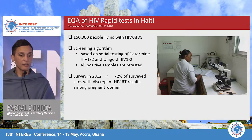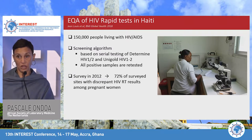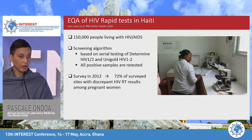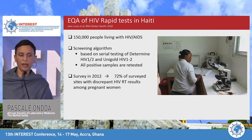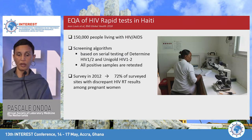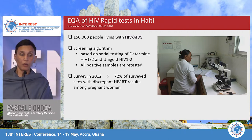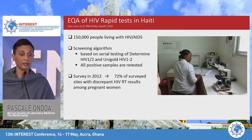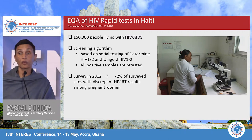We have experience from EQA of HIV rapid tests in Haiti, based on a publication from last year. Haiti is a small island with significant HIV prevalence and systems challenged by dysfunction. They have a screening algorithm for HIV diagnostics based on robust rapid tests in which all positive samples are retested. However, a survey in 2012 showed that 72 percent of surveyed sites had discrepant results of HIV rapid tests among pregnant women, which really shows how important quality assurance is.